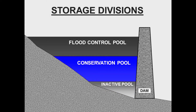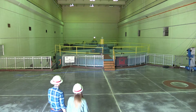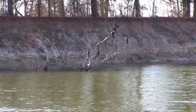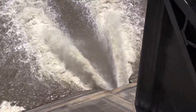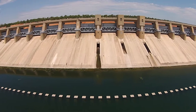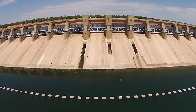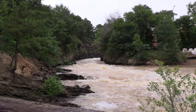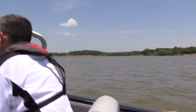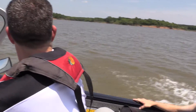The conservation pool contains all the water stored for project purposes. Releases are made from this pool for hydropower, water supply, water quality, and minimum flow requirements. The conservation pool fluctuates as water is used or evaporates, then is replaced by inflows. It's also the pool you most commonly use for recreation.